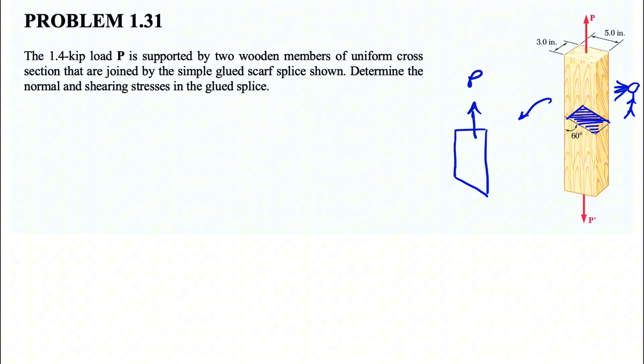So we have the force P in here, which means we have to have the force P on the other side of the section too. Since we are in equilibrium, these two forces have to be the same. And we have this area here, which we can call A. And our A would be basically the area of this part, which is the area of the rectangle.